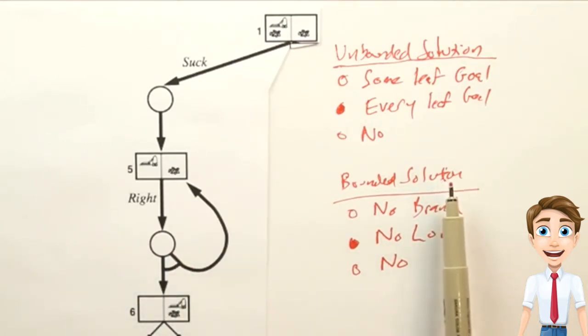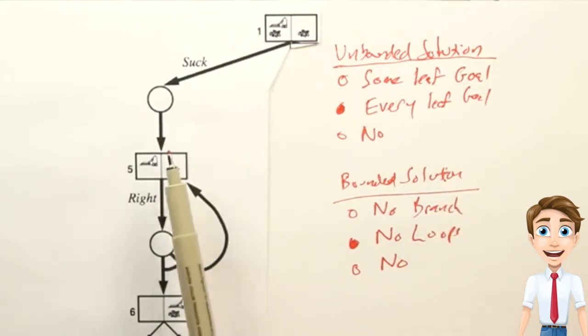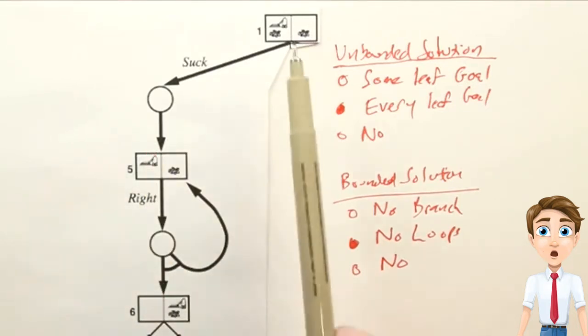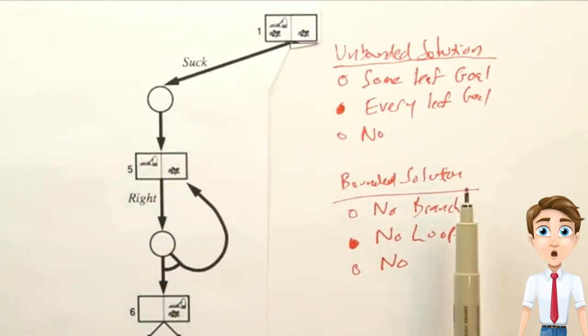Now, in terms of a bounded solution, it's okay to have branches but not to have loops. If we had branches and we ended up with one goal here and one goal here in one, two, three steps, one, two, three steps, that would be a bounded solution.